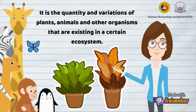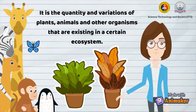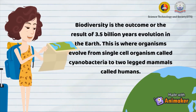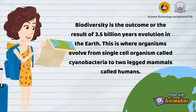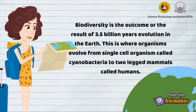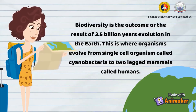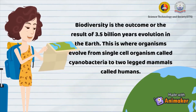Biodiversity underpins all life on Earth and refers to the biological variety of all its forms, from the genetic makeup of plants and animals to cultural diversity — the quantity and variety of plants, animals, and other organisms existing in a certain ecosystem. This includes not only plants and animals but also microorganisms like bacteria, archaea, and algae. Biodiversity is the result of 3.5 billion years of evolution, from single-cell organisms called cyanobacteria to two-legged mammals called humans.